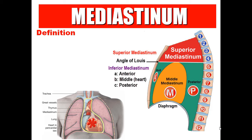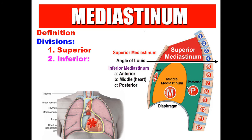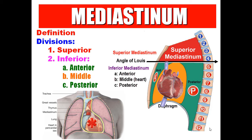The mediastinum is the space between the two pleural cavities, or the space between the two lungs. It is divided by the plane of the sternal angle — a line extending from the sternal angle to the lower border of T4 vertebra — into superior mediastinum above and inferior mediastinum below. The inferior mediastinum is divided by the heart into three parts: anterior mediastinum (anterior to the heart), middle mediastinum (containing the heart and big vessels), and posterior mediastinum (behind the heart).